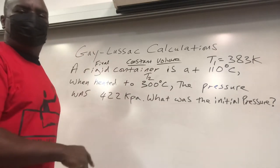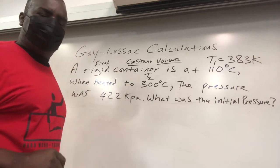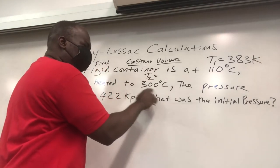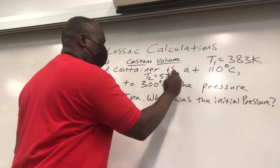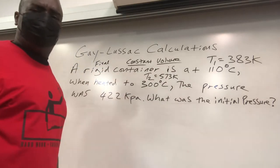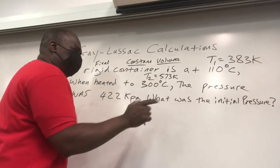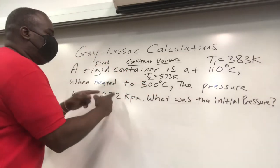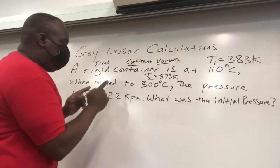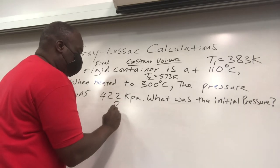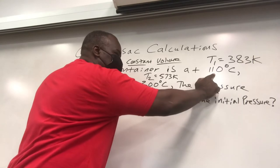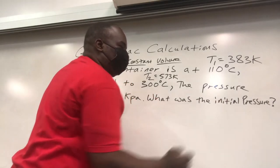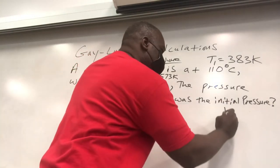When heated to 300 degrees C, so once again now, this is our T2. We're always labeling our variables properly before we jump into any type of calculation - that cuts down on mistakes immensely. So we got 273 plus 300, that's going to give us 573. We always want to work in Kelvin temperature. The pressure was 422, so when it was heated, it turned to 422.